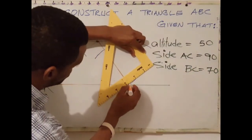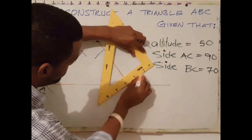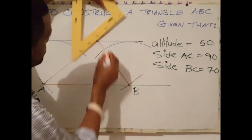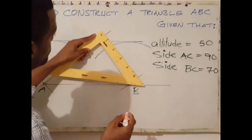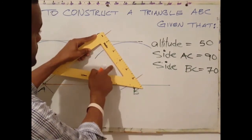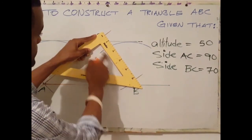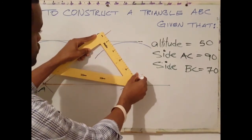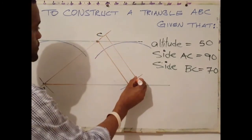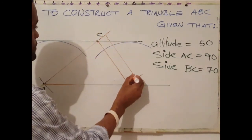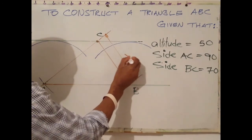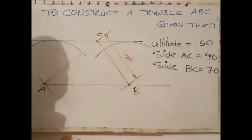I'm going to join B to C, drawing my perpendicular line, and I'm using this as a gauge to draw my parallel line, so that is my 70 millimeters.